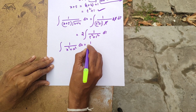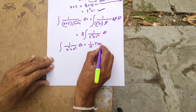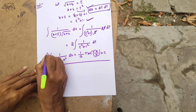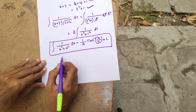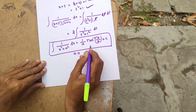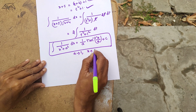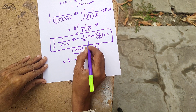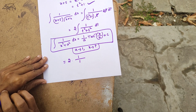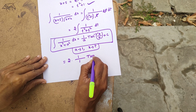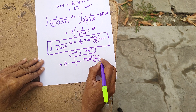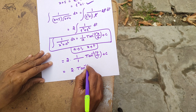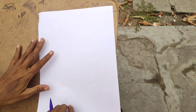This matches the formula for 1 by (x squared plus a squared) dx, which gives 1 by a times tan inverse of x by a plus c. Here a equals 1, so applying the formula we get 2 into tan inverse of t plus c.